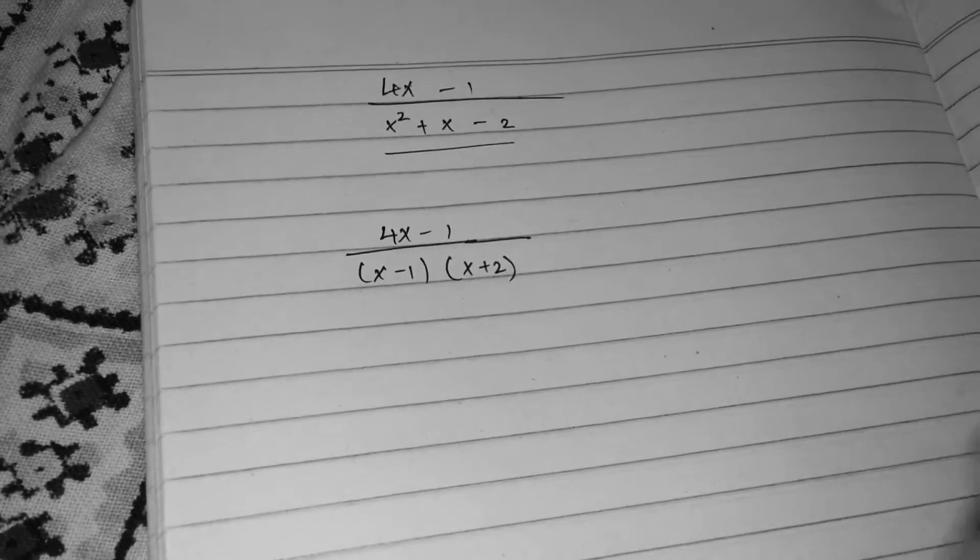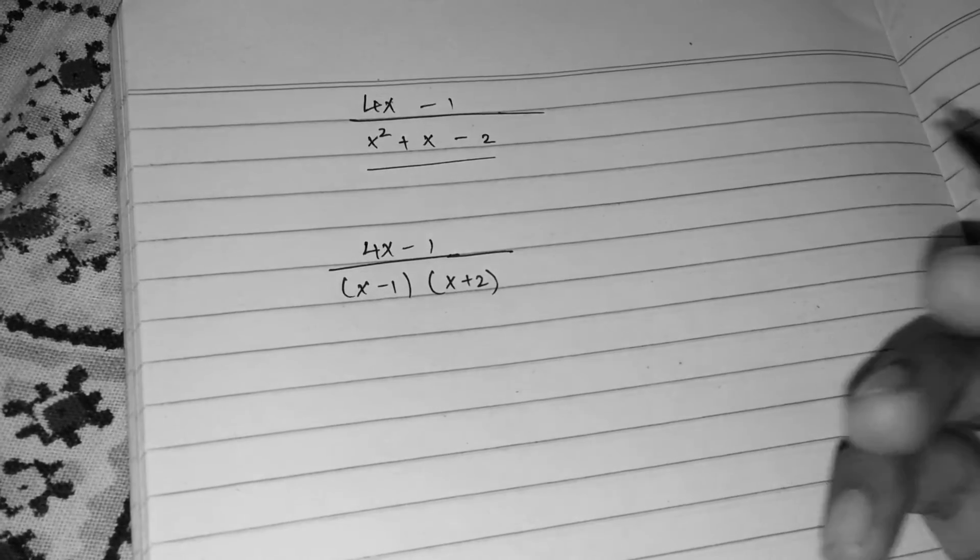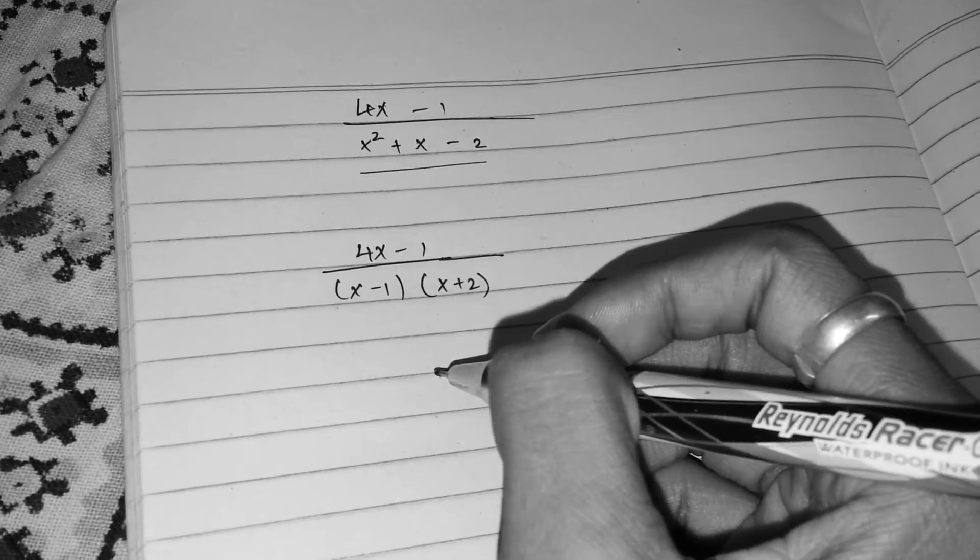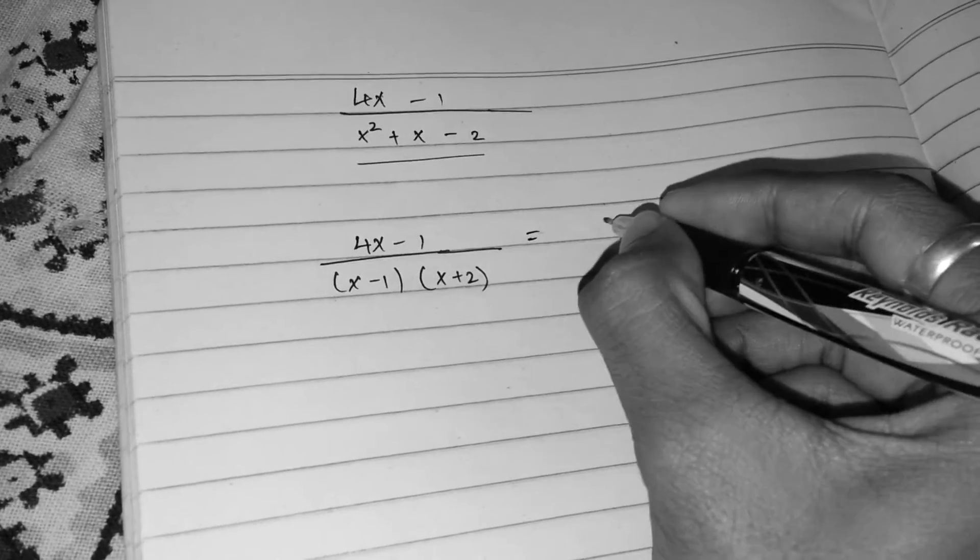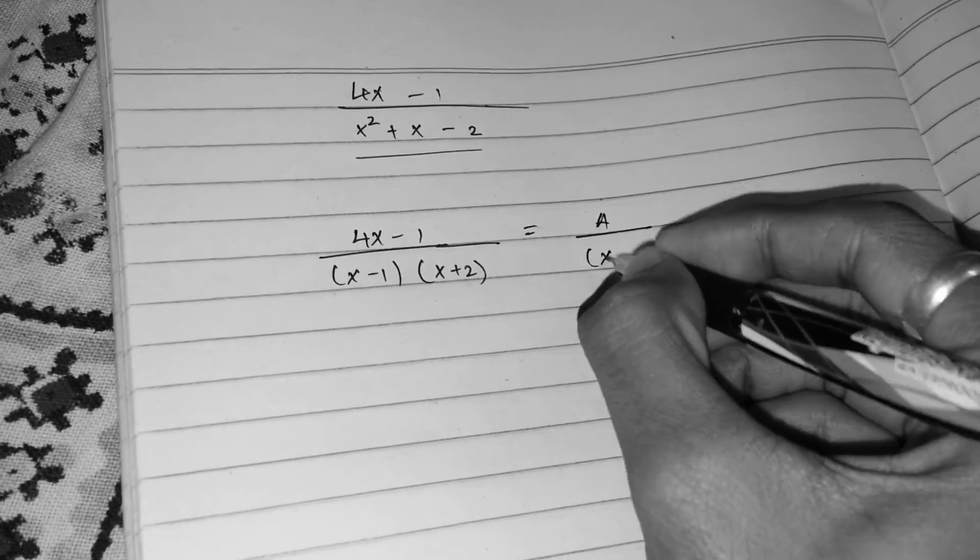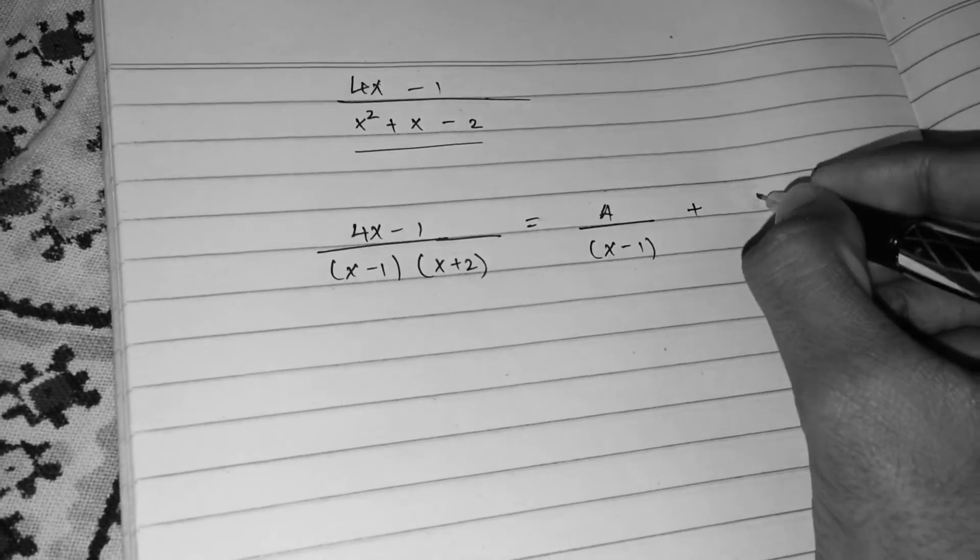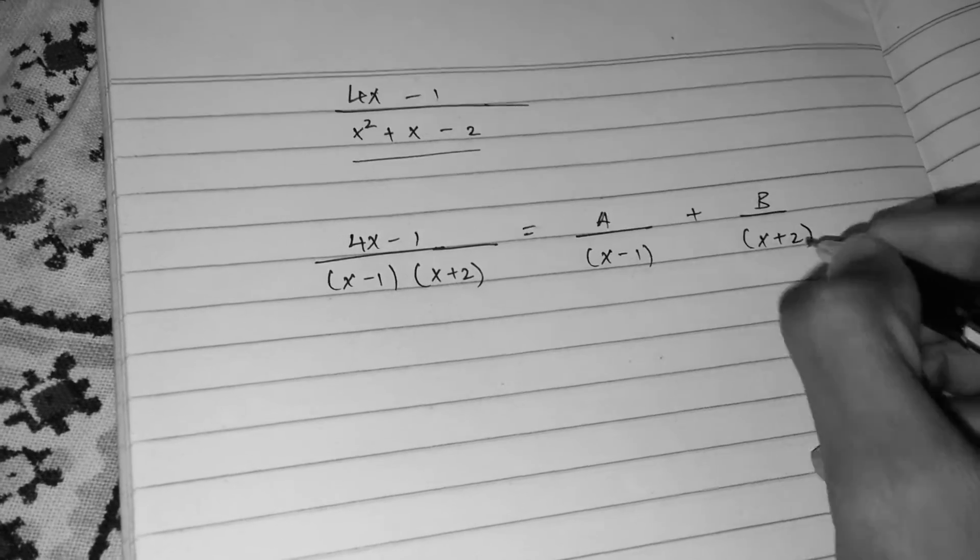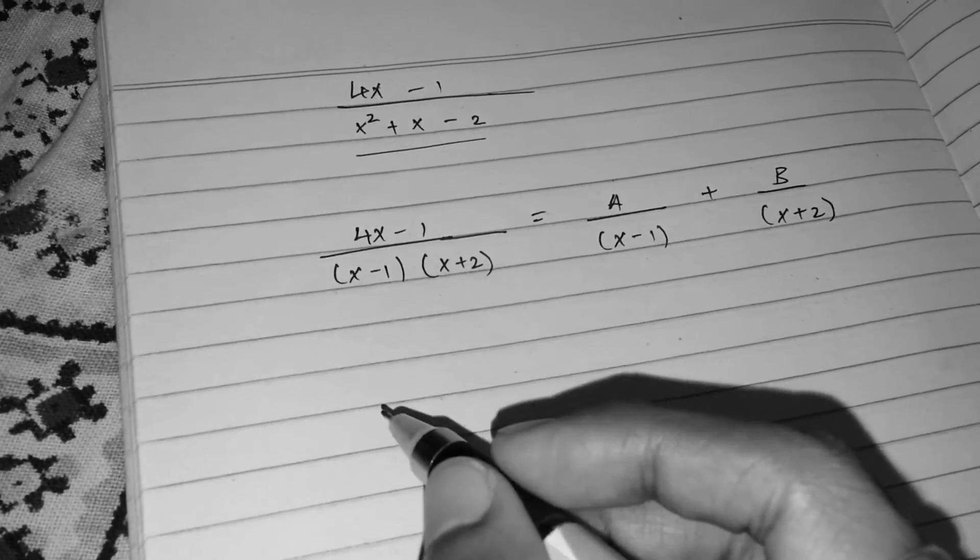After factorizing the denominator, we need to set up a few things. What I will do is I will break this thing into two parts as A divided by x minus 1 plus B divided by x plus 2.